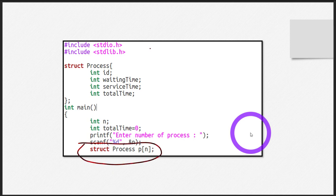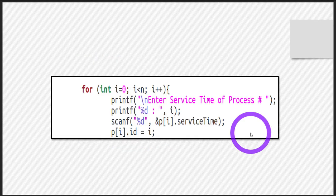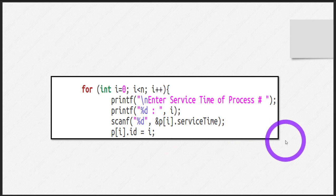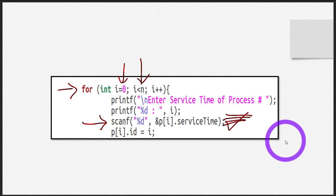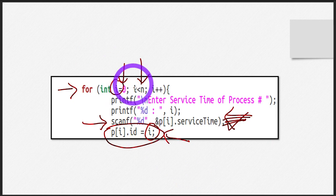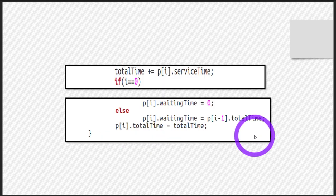I defined the structure variable — an array of structures. First, I fill up the array by taking the ID and service time of each process from the user. I ran a loop starting from zero and going to less than the number of processes. I took the service time from the user, but I did not take the ID from the user — instead I assigned it as the index of the loop variable i.